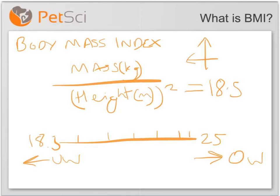You can use this as a way to predict any possible health issues relating to weight, such as a predisposition to heart attacks or similar issues. But obviously it's not without its shortcomings — for instance, it doesn't take into account lean muscle mass, or differences in people's frames that might mean one person is considered overweight, but they're actually a normal weight for their size.